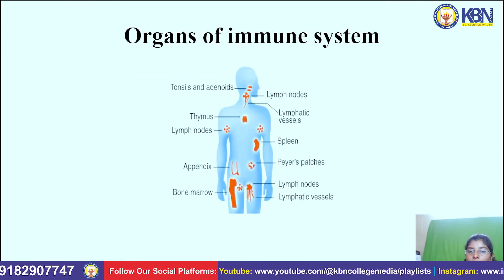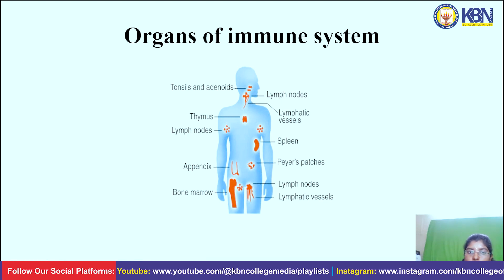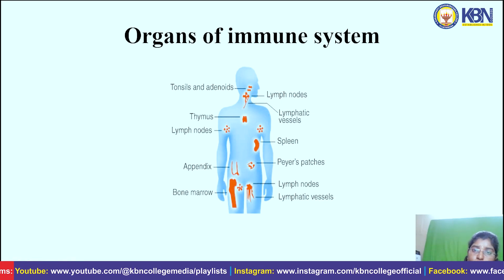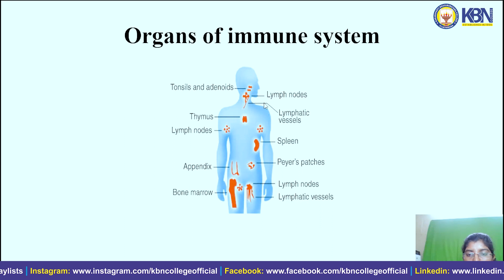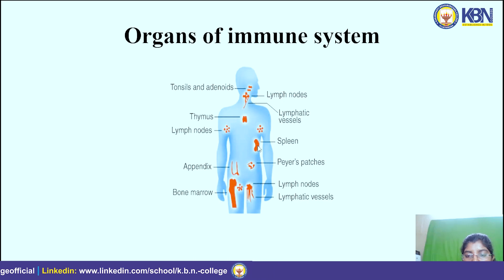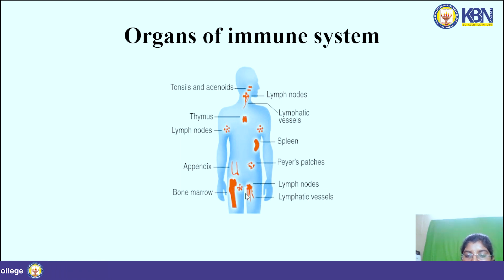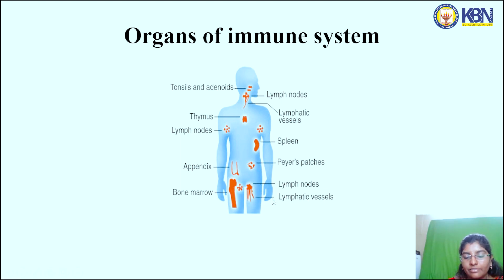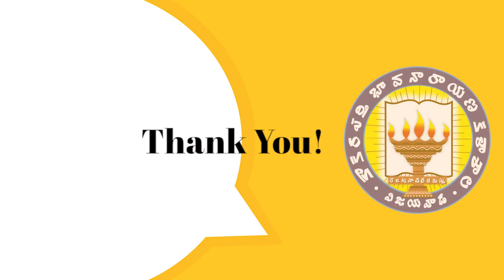These are the organs of the immune system. In the human body, we have organs which give responses to the immune system, including: tonsils and adenoids, lymph nodes, lymphatic vessels, thymus gland, spleen, Peyer's patches, appendix, and bone marrow. These organs of the immune system help in immune responses.